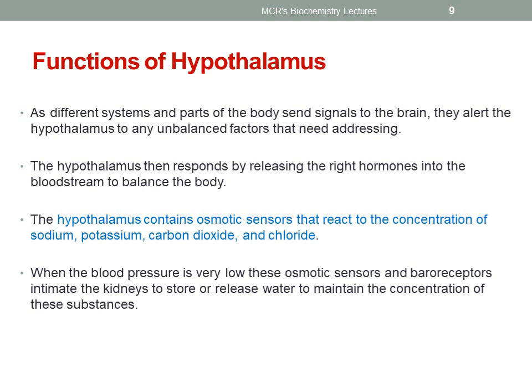The hypothalamus then responds by releasing the right hormones into the bloodstream to balance the body. The hypothalamus contains osmotic sensors that react to the concentration of sodium, potassium, carbon dioxide and chloride. When the blood pressure is very low, these osmotic sensors and baroreceptors intimate the kidneys to store or release water to maintain the concentration of these substances.